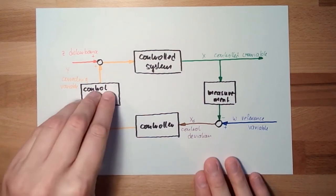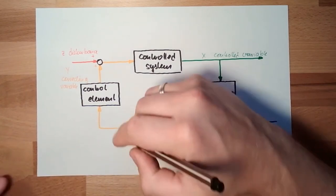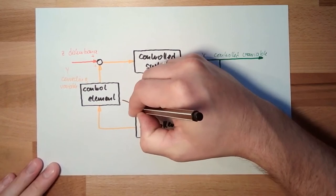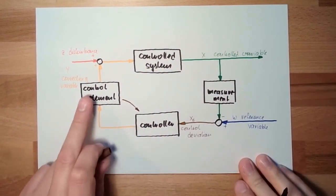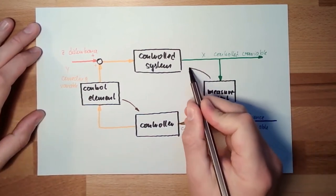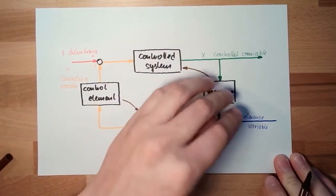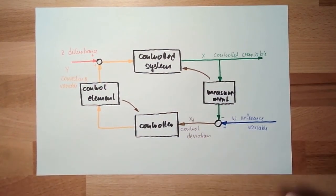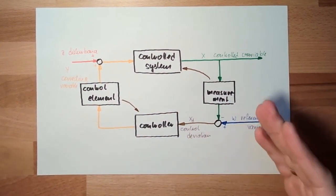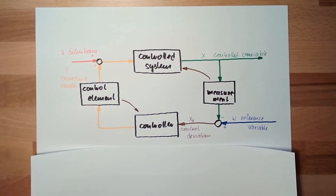What is usually done, and we will do as well, is that the control element will be seen as part of the controller, so it will be moved in, meaning the output of the controller is directly the correcting variable. The measurement is part of the control system for us, so the measurement will be moved in. We assume that our measurement is good enough — this assumption is valid.